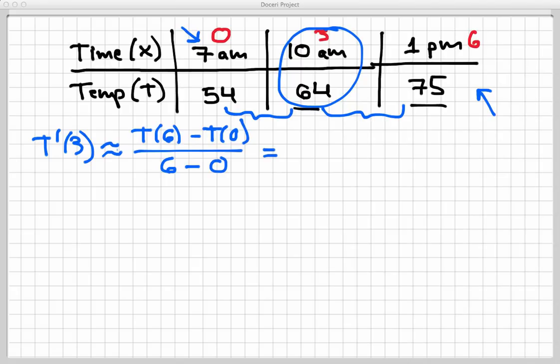Okay, so reading off the table, T(6) is 75, T(0) is 54. And of course, 6 minus 0 is 6. This gives me 21 over 6, and that is exactly 3.5. Okay, that's the value of T'(3).